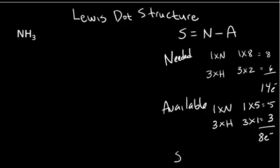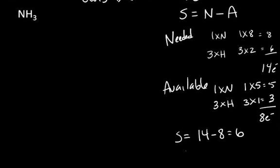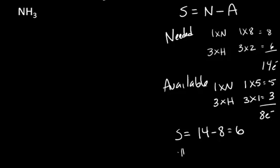So to figure out the number of bonds, we need to figure out the number of shared electrons. It's going to be 14 minus eight equals six. So the number of bonds is equal to the total number of shared electrons divided by two. Six divided by two is equal to three, so we expect three bonds.